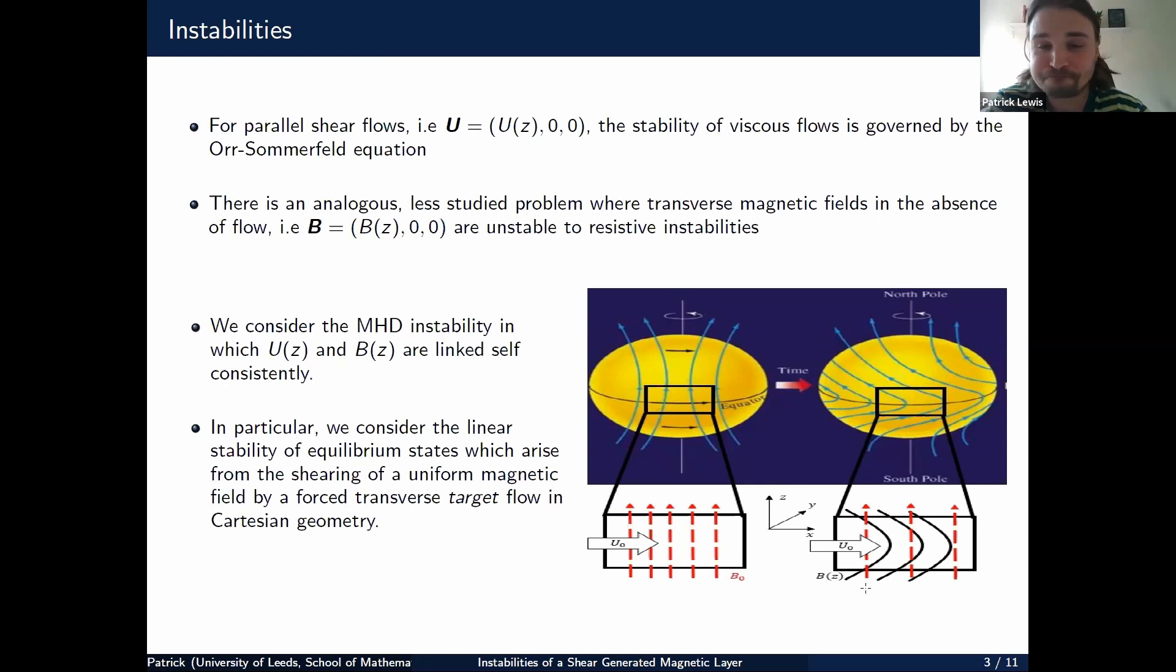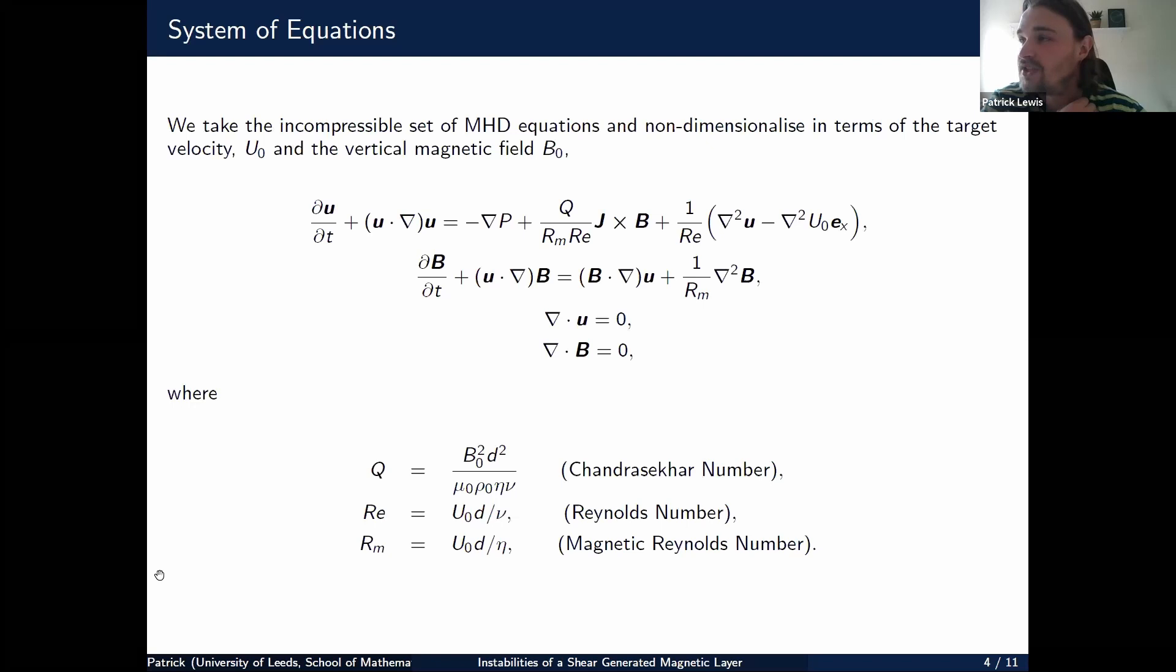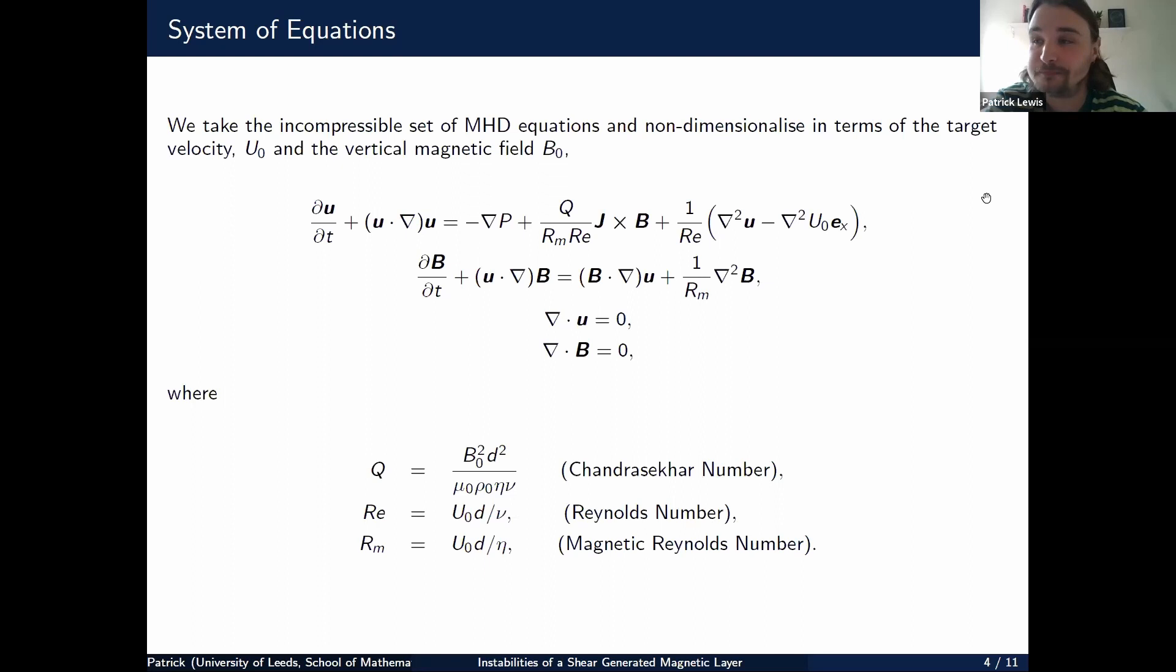We take the incompressible set of MHD equations with horizontal forcing from our target flow U0. We non-dimensionalize in terms of our target flow U0 and vertical magnetic field B0. We have three non-dimensional parameters: Q, the Chandrasekhar number; Re, the Reynolds number; and Rm, the magnetic Reynolds number. That is the system of equations - our momentum equation, induction equation, and our incompressibility and solenoidal conditions.